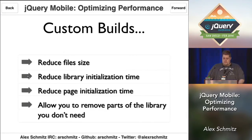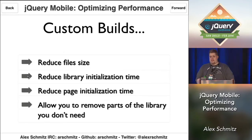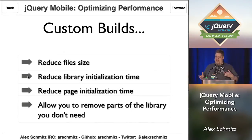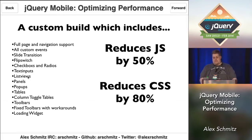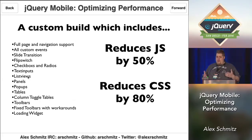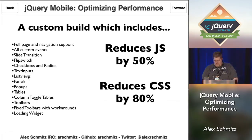Custom builds are another great way to increase performance. It reduces your file sizes and reduces the time the library takes to spin up because you're not initializing components you're never going to use. In a sample custom build with some common elements, it actually reduces the JavaScript size by 50% and the CSS by an amazing 80%. A big part of that is transitions — most people will only use one or two of the 12 transitions we provide, so removing the rest really reduces file size.